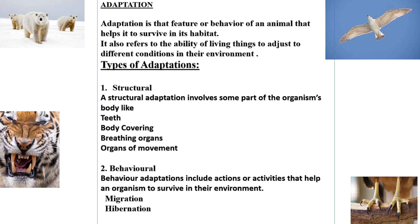We are going to study about the different types of adaptation. Basically, adaptations are of two types. One is structural adaptation, which involves some part of the organism's body like teeth, body covering, breathing organs, and organs of movement, structured in a way that helps the animal cope with its environment. Behavioral adaptations are those activities and actions which an animal adopts in order to survive in its habitat.